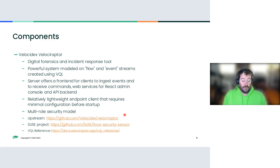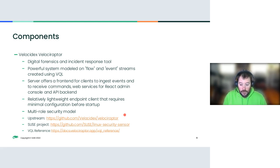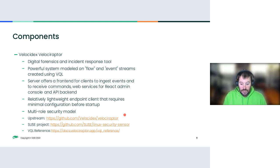Velociraptor is a digital forensics and incident response tool written in Go, with a user interface written in React JavaScript. Internally it's a powerful system modeled on flow and event streams created using VQL, which is a SQL-like language that uses a combination of functions and plugins to collect data from endpoints, process it, and present it as rows of data. The server offers the front end for clients to ingest events and to receive commands, web services for the React admin console, and API backend. It's relatively lightweight on the endpoint, and it offers the multi-role security model that IT security required.